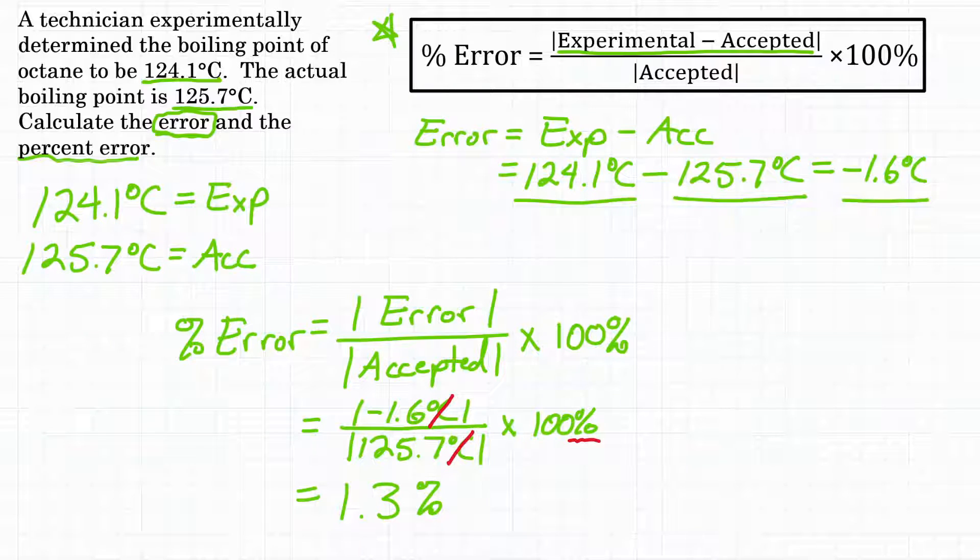All right, there you have it. You determine the boiling point of octane to be 124.1 degrees Celsius, but the actual boiling point is 125.7. Calculate your error and your percent error. Well, our error is negative 1.6 degrees Celsius. And our percent error is 1.3%.